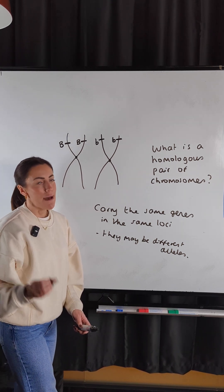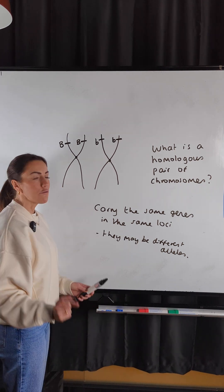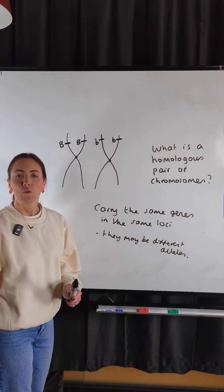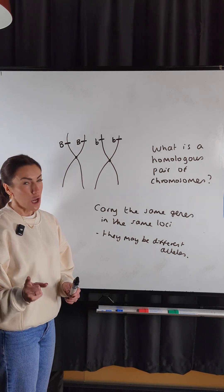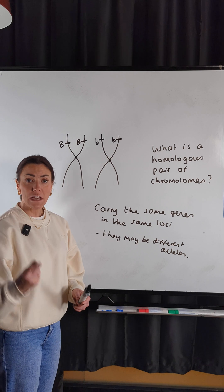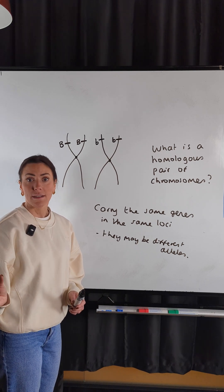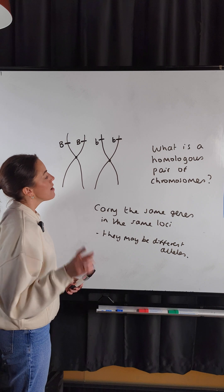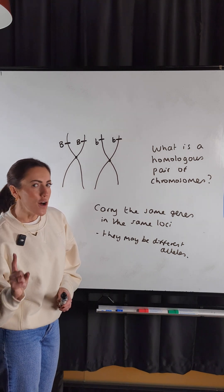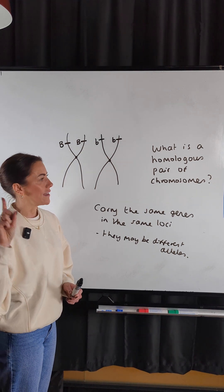Remember that in a human body cell there are 23 pairs of chromosomes, or 46 in total. The final pair is your sex chromosomes. If you're a female, your sex chromosomes are homologous because you have two X chromosomes. But if you're a male, your final pair is not homologous because you have an X and a Y chromosome.